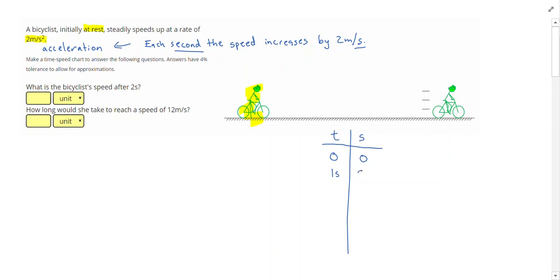The fact that we have seconds in there twice is why the units on acceleration are seconds squared. So that means after 1 second, the speed is 2 meters per second. Our first question asks us, what is our speed after 2 seconds? So after 2 seconds, we'll continue to increase by 2 meters per second every second, and get to 4 meters per second. Then it says, how long would it take her to reach a speed of 12 meters per second? Well, we'll just continue with our chart, and keep counting that speed up by 2 meters per second. In doing that, we see that the bicyclist will reach a speed of 12 meters per second after 6 seconds.